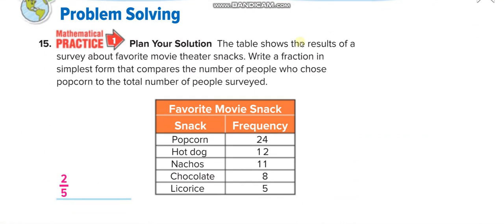The table shows the results of a survey about favorite movie theater snacks. Write a fraction in simplest form that compares the number of people who choose popcorn to the total number of people surveyed. So the number of people who choose popcorn are 24, and the total number of people, you have to add all of them. If you add all of them, that is 60. To simplify, the greatest common factor of 24 and 60 is 12. So 24 divide 12 is 2 and 60 divide 12 is 5, so it's 2 over 5.